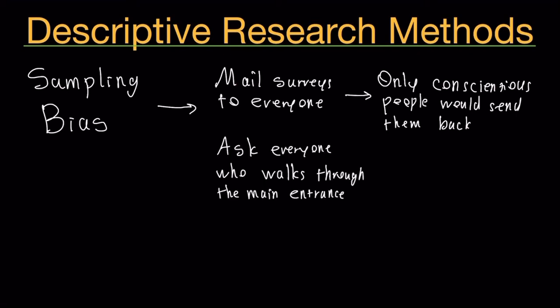Another example would be asking everyone who walks through the main entrance, but then there are people who walk through the back door and maybe the population you're trying to study also includes the people in the back door. Those people won't have an equal probability of being included in the study, so therefore you have a sampling bias.